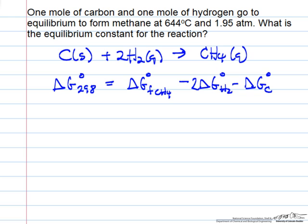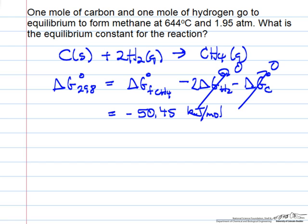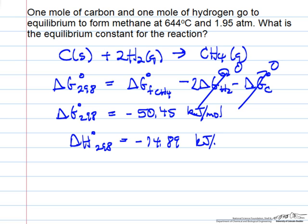Since we have carbon and hydrogen as elements, and heat of formation means forming from the elements, these values are zero. So the free energy change for the reaction is just the delta G of formation of methane from a table. Likewise, the enthalpy change at standard conditions is minus 74.89 kJ/mol, also from a table of heats of formation.